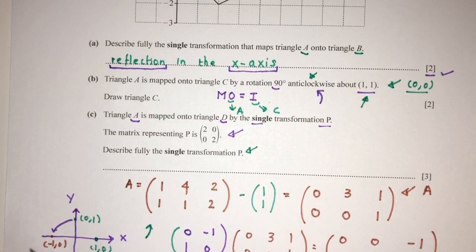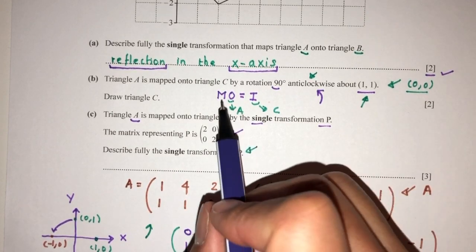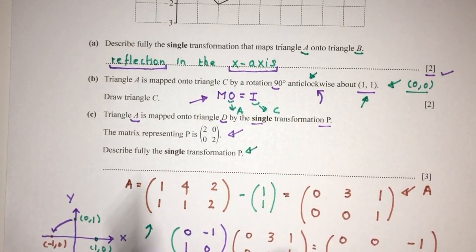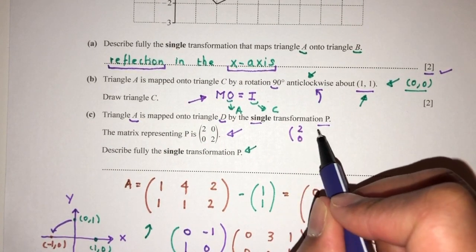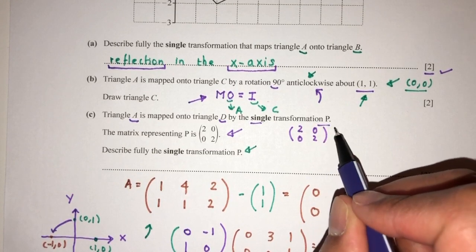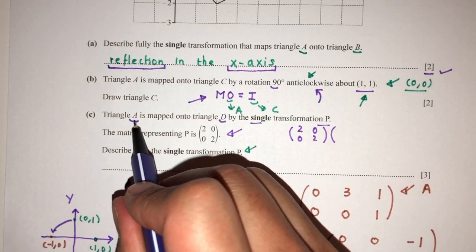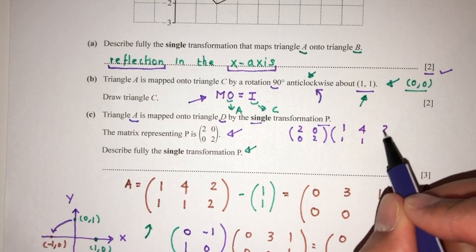But obviously, you don't need to do that. You can always find out the shape of the triangle D first and then determine what is that transformation. So use this same formula right here. So matrix time object. So matrix is (2,0,0,2). Object is the point, is the triangle A. As you can see, here it is. (1,1), (4,1), (2,2).